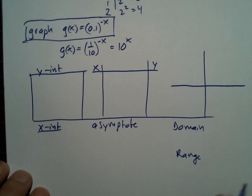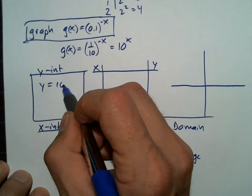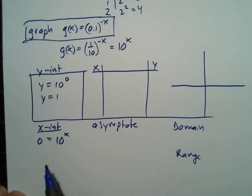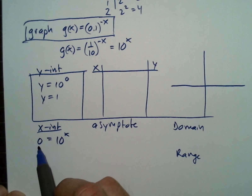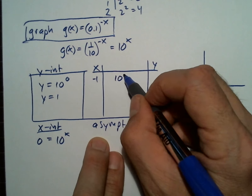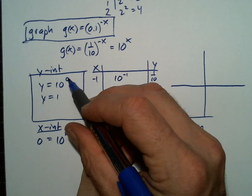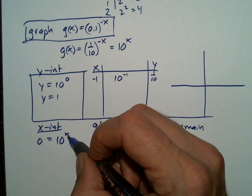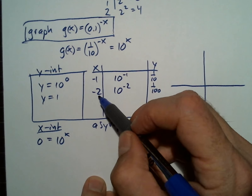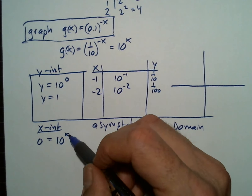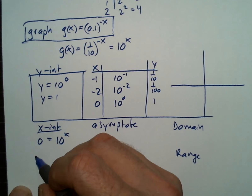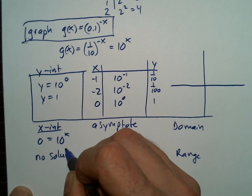The y-intercept is when x equals zero. The x-intercept is when y equals zero, and we have to think of a number that makes this equal to zero. Let's go to the table and start guessing. Maybe negative one — but then we get one-tenth. Maybe zero? No, because zero makes it one. A negative two gives one over a hundred. No negative number makes this equal to zero, zero makes it equal to one, and a positive number won't work either. So this has no solution — there's no x-intercept.